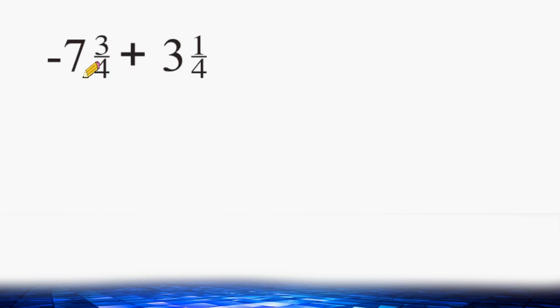Because if you were to start at negative 7 and 3 quarters below zero, if you were to add 3 and 1 quarter, you would move towards zero, but you would not make it past zero. You would still be under zero. So right off the bat, we know that our answer is going to be negative.